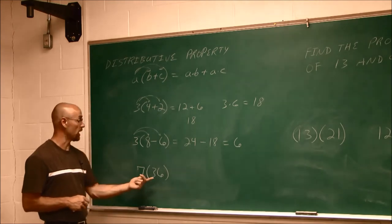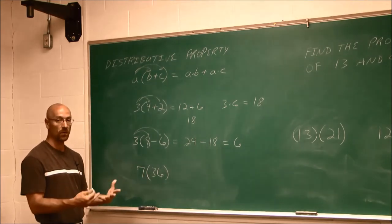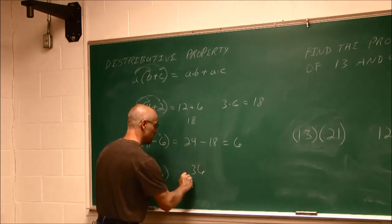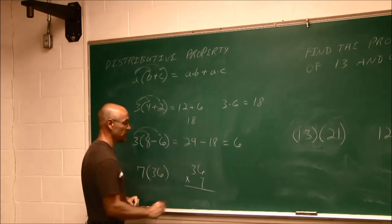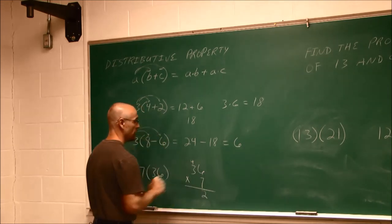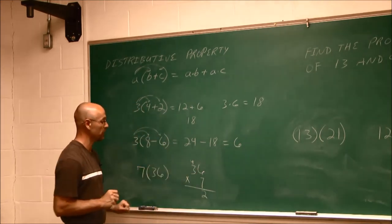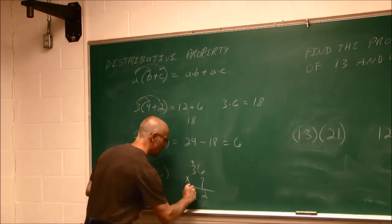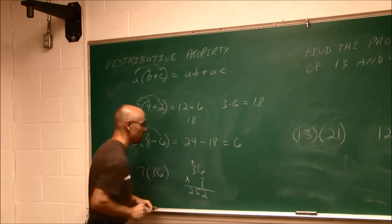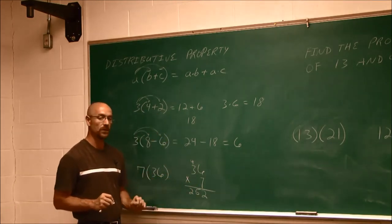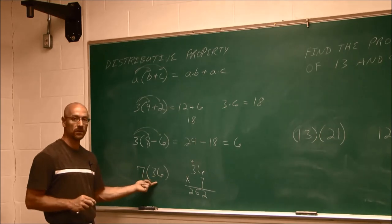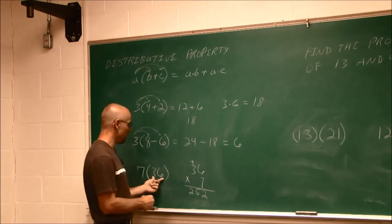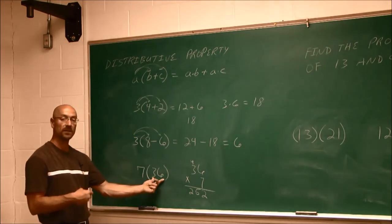Now, usually when we multiply numbers, we write them horizontally and we multiply. Let's do that just for a moment, 36 times 7. 7 times 6 is 42, and you can see why it's important to know your multiplication tables. 7 times 3 is 21. 21 and 4 is 25. So 36 times 7 is 252.